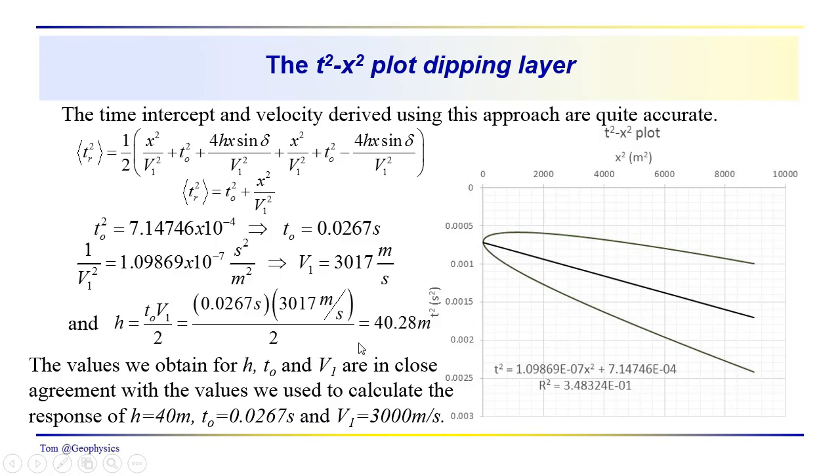We should be able to get our velocity just by taking the square root of the reciprocal here and our T zero just by taking the square root of this. Our T zero here, this 7.14746 times 10 to the minus fourth second squared would be .0267 seconds.